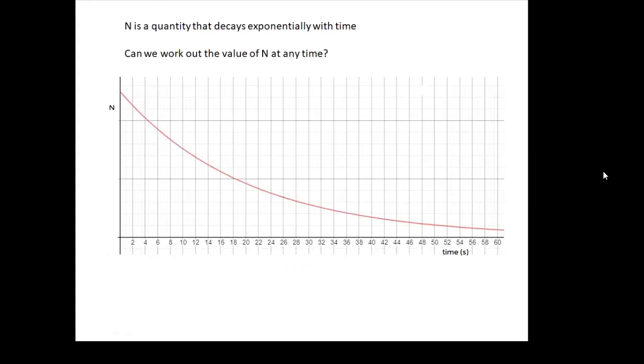Now, n is a quantity that decays exponentially with time. What would be great is if we could actually work out the value of n at any time. If we had an equation, n equals something, something, something time, and we could actually work out the value of n at any point in the future. That would be very useful.